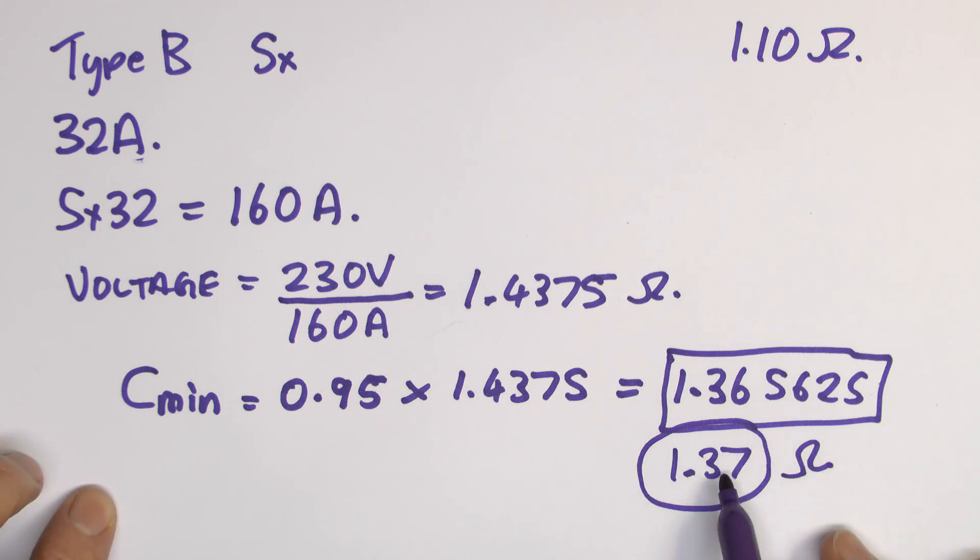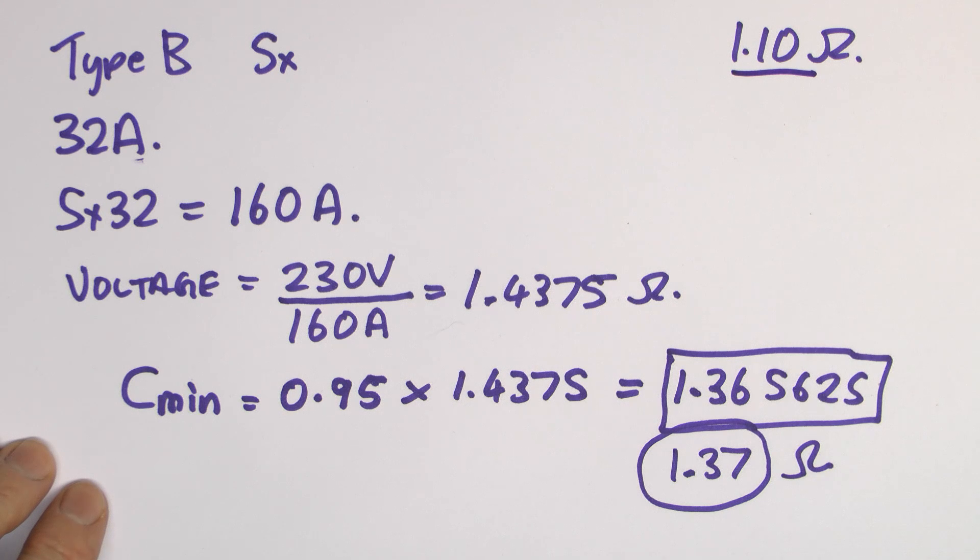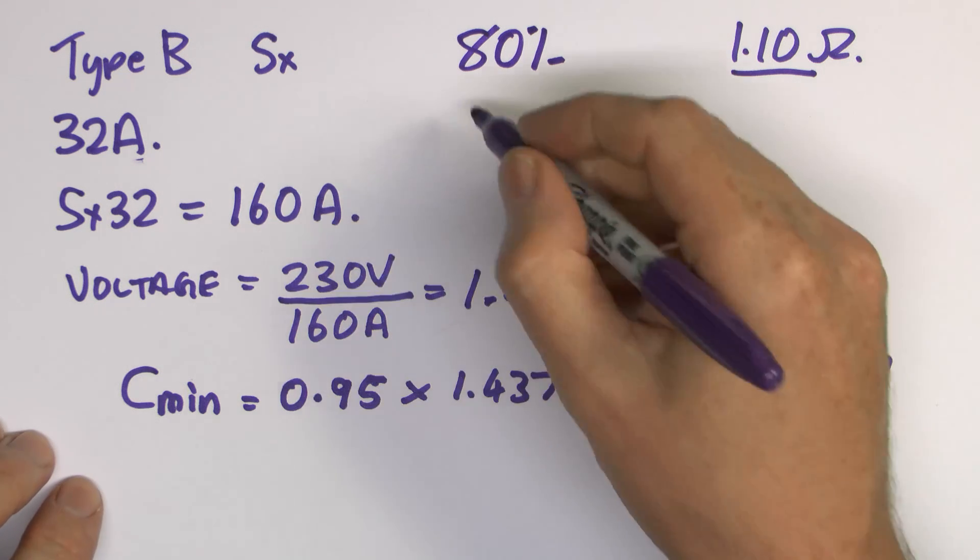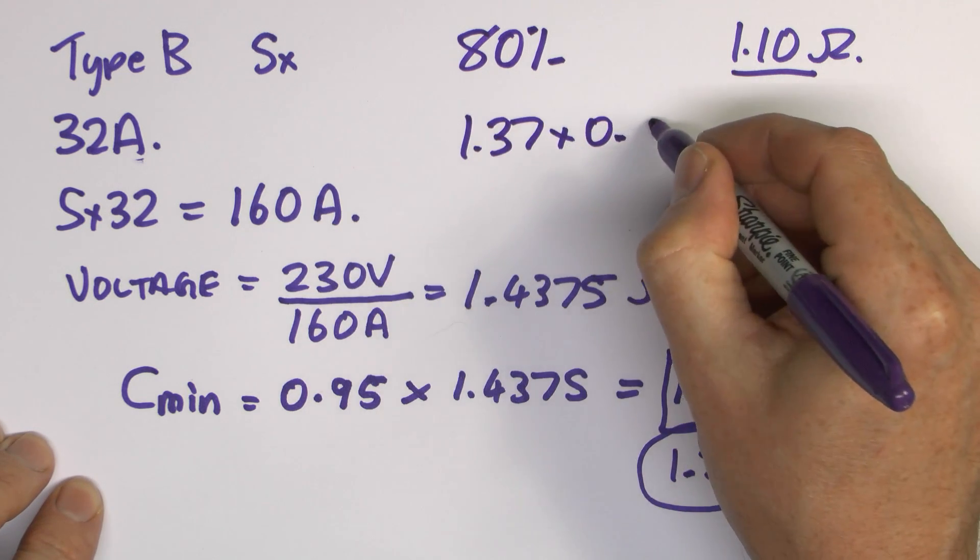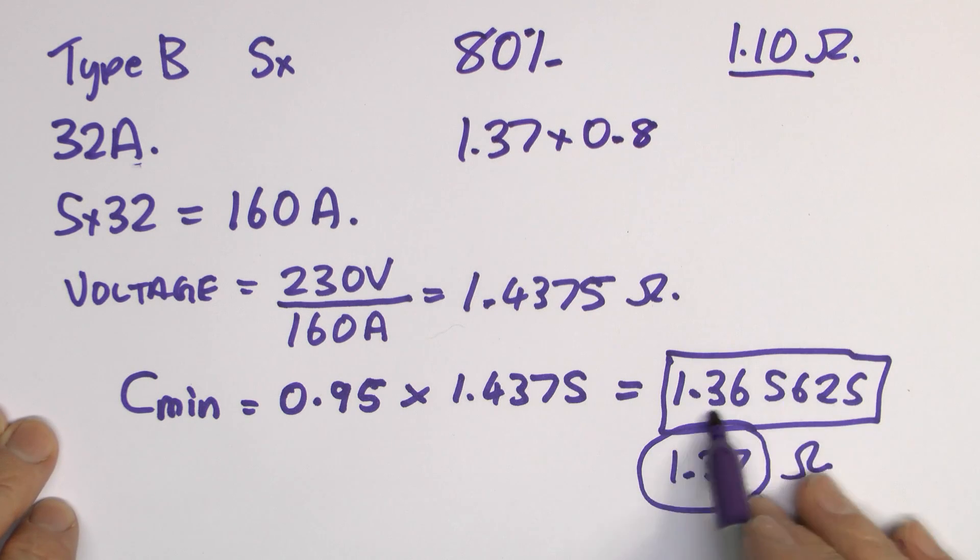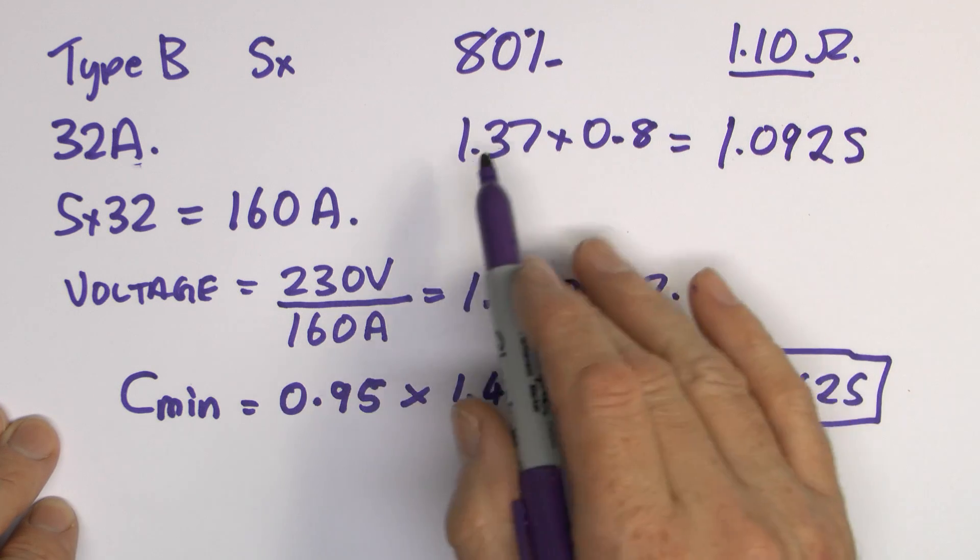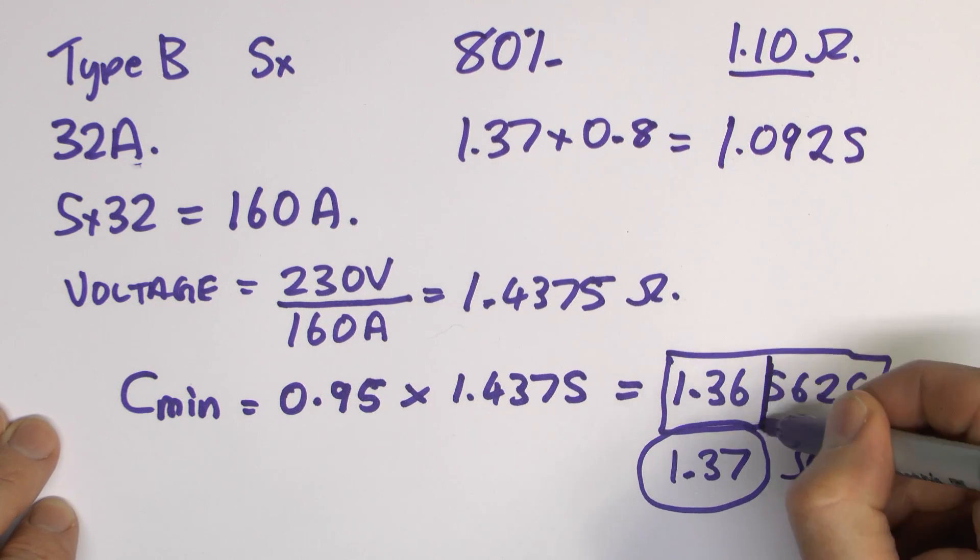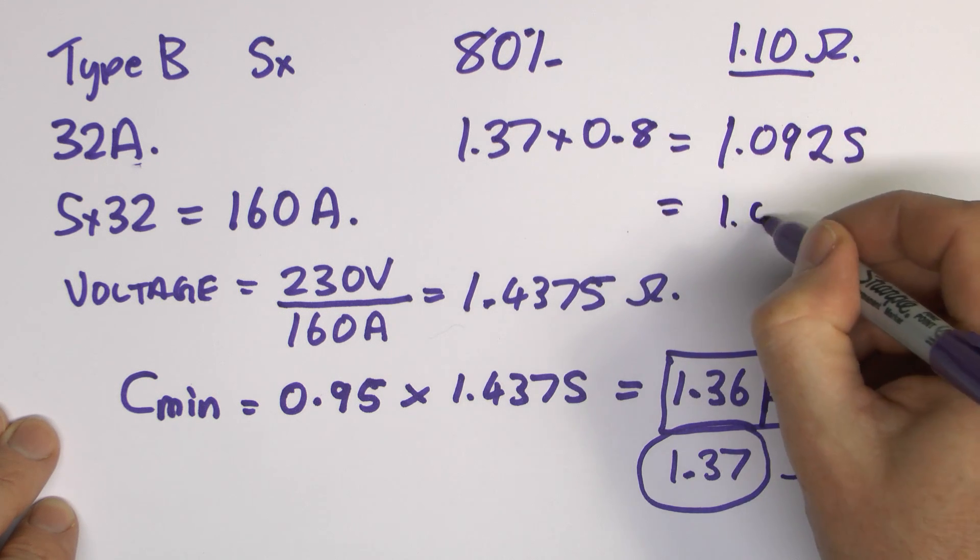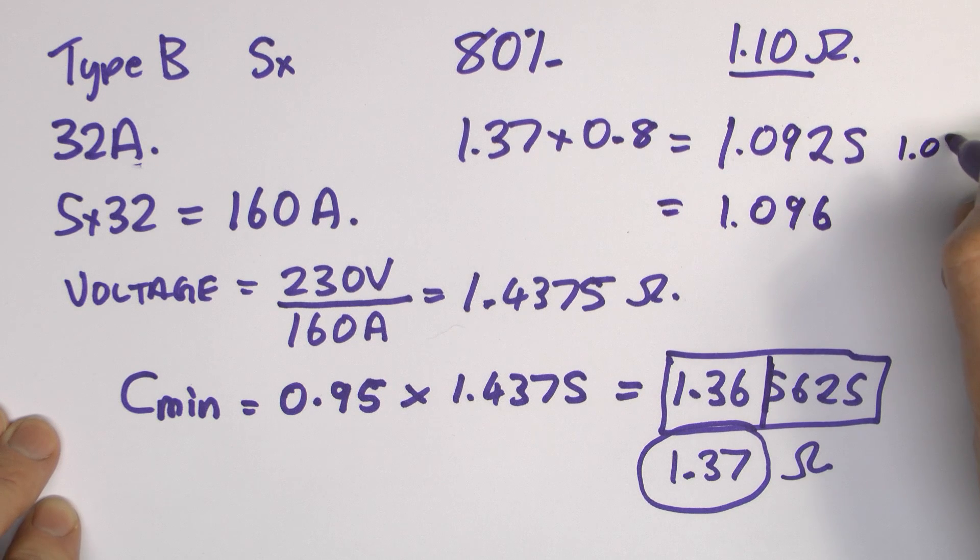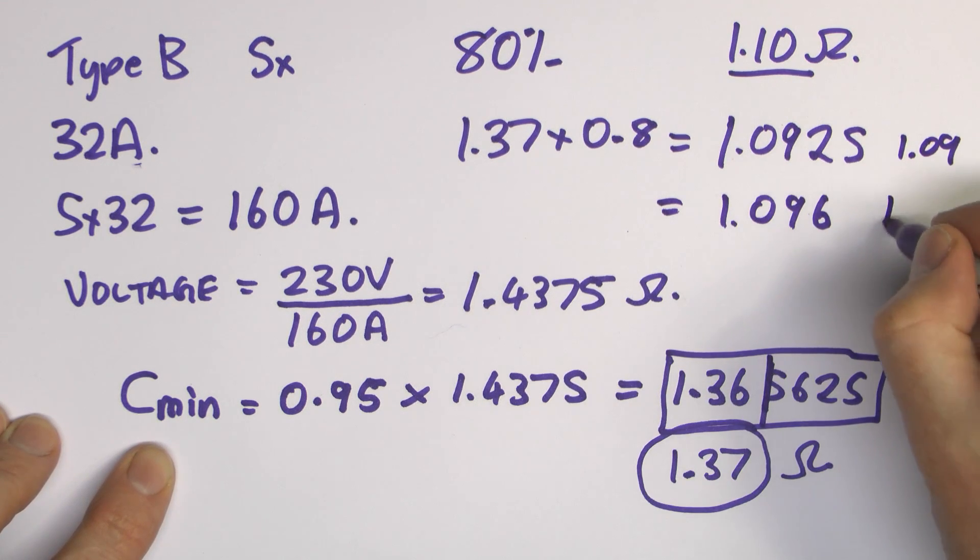Now of course there is another part to this because 1.37 is not 1.10 fairly obviously. However, 1.37 is what's in the BS7671. 1.10 is what's on that printed sheet. And the difference here is 80%. Because what's actually happened is that the 1.37 is being multiplied by 80% or 0.8 effectively. And if we use the full value there with all the decimal places, that actually gives us a value of 1.0925. If we just use 1.37 times 0.8, so basically rounding off at that point already, then the value we get is actually 1.096. So if you're going to round this off to a sensible number of digits, which is basically two decimal places, it's either going to be 1.09, or in the case of this one, if you've rounded it and rounded it again, you get 1.10.